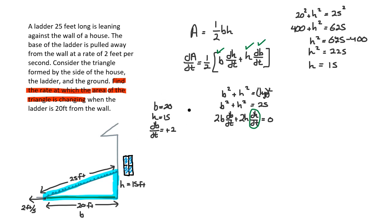I wrote them out here just for reference, I just got them from this picture. So we're going to have 2 times 20 times 2 plus 2 times 15 times dh/dt equals zero. Well, take a moment to simplify, that's going to be 80 plus 30 dh/dt. I will subtract 80 from both sides.